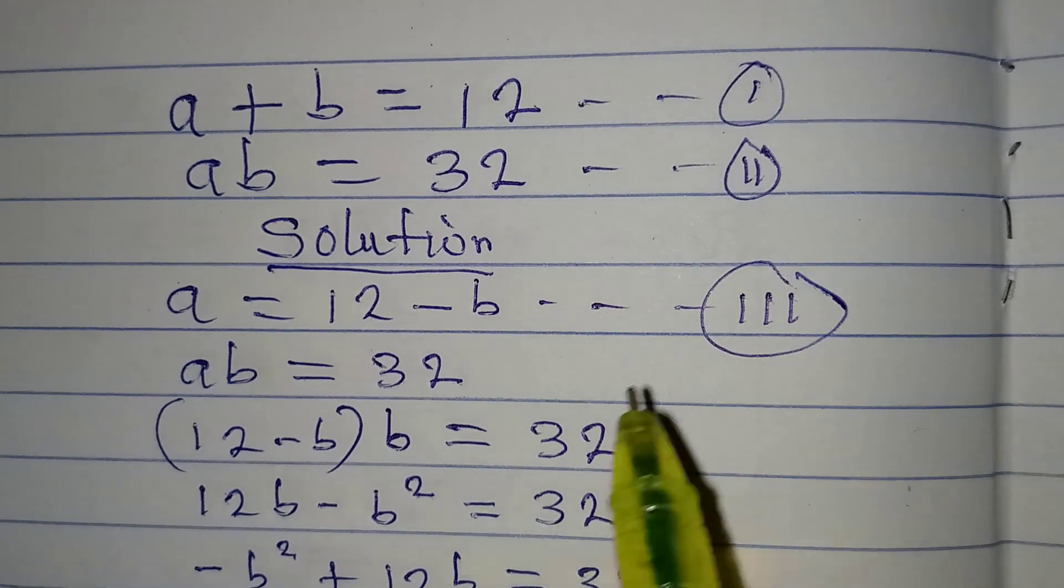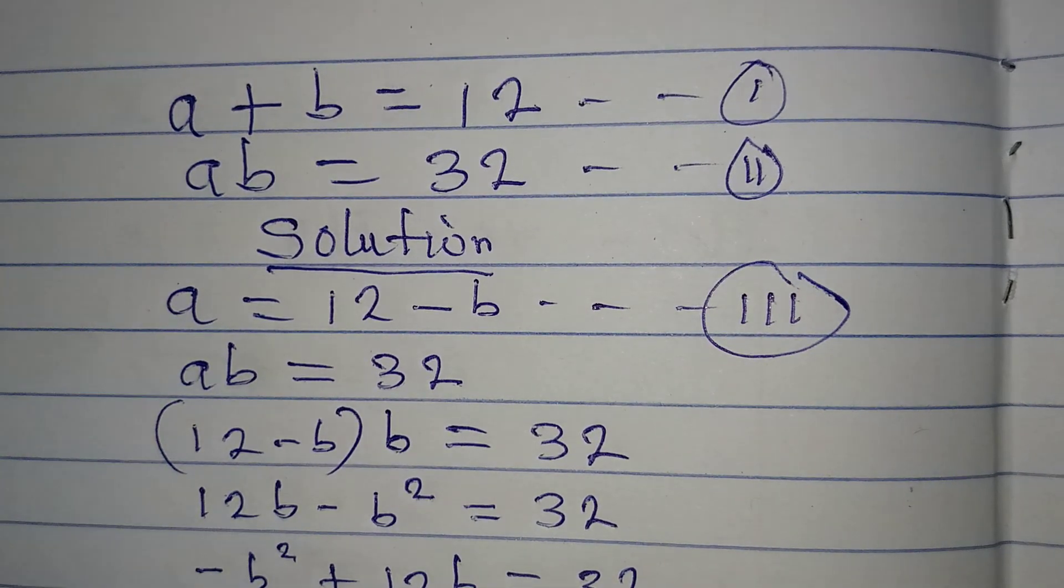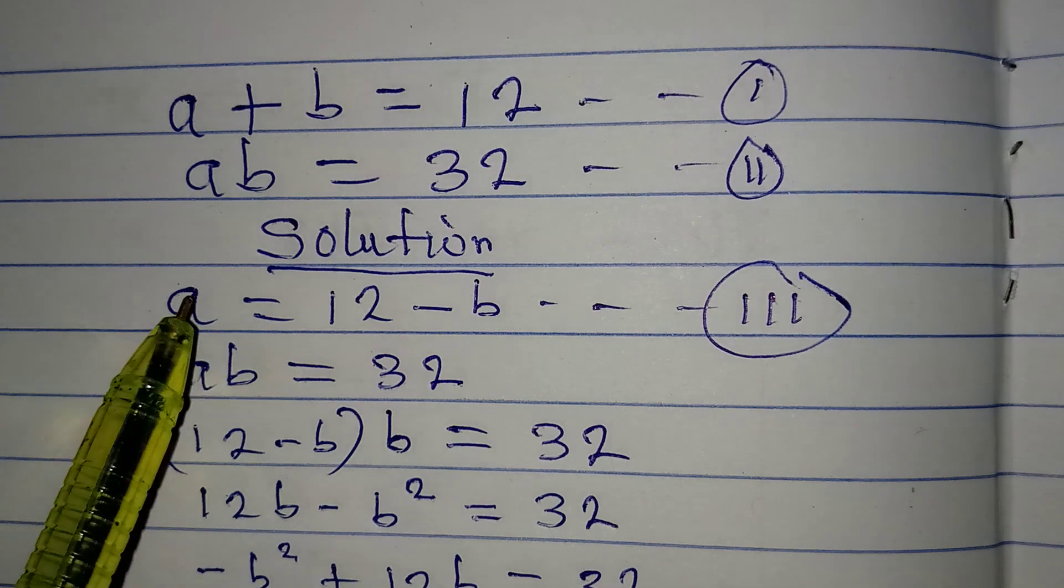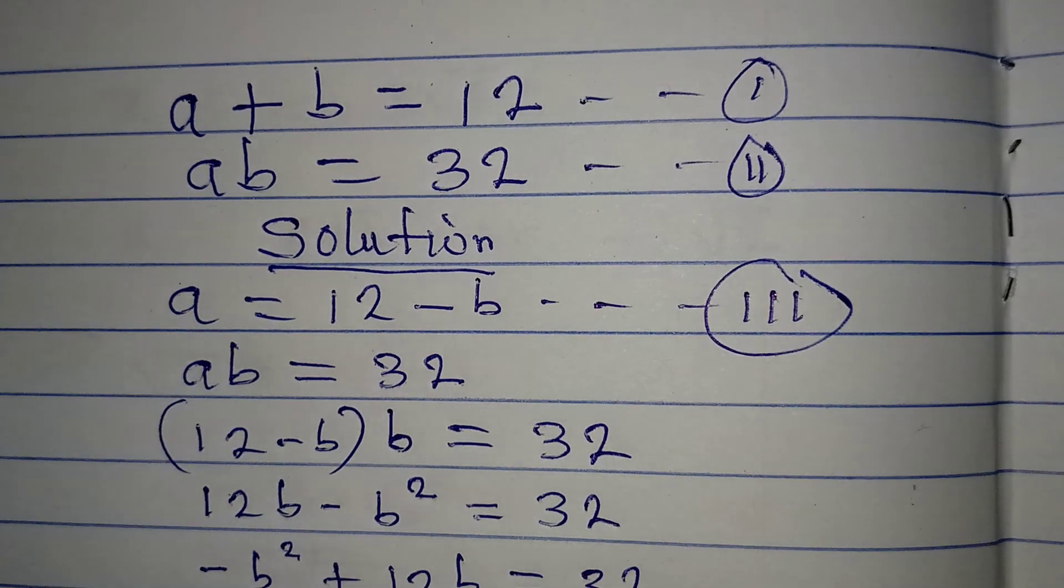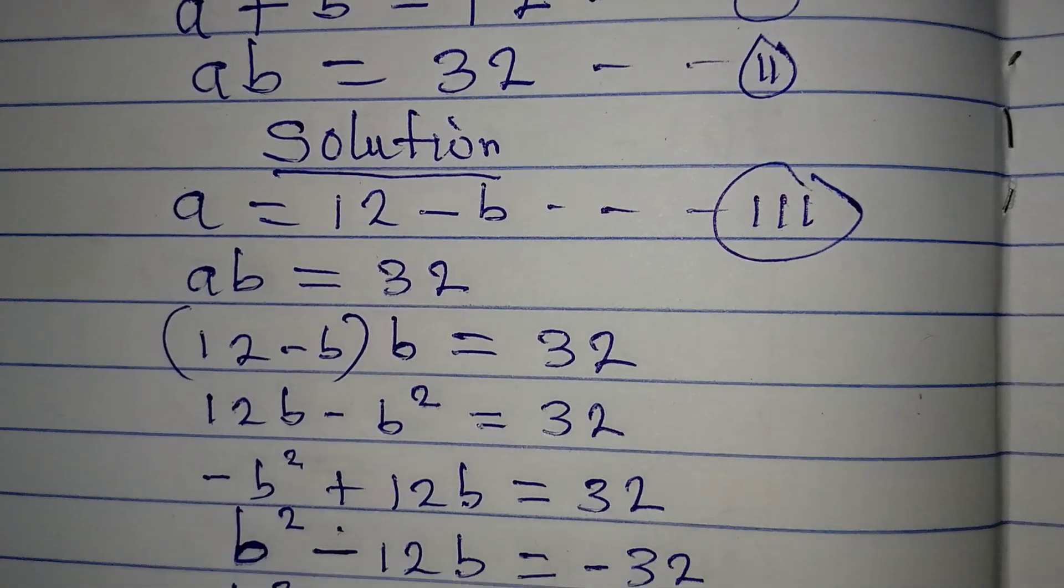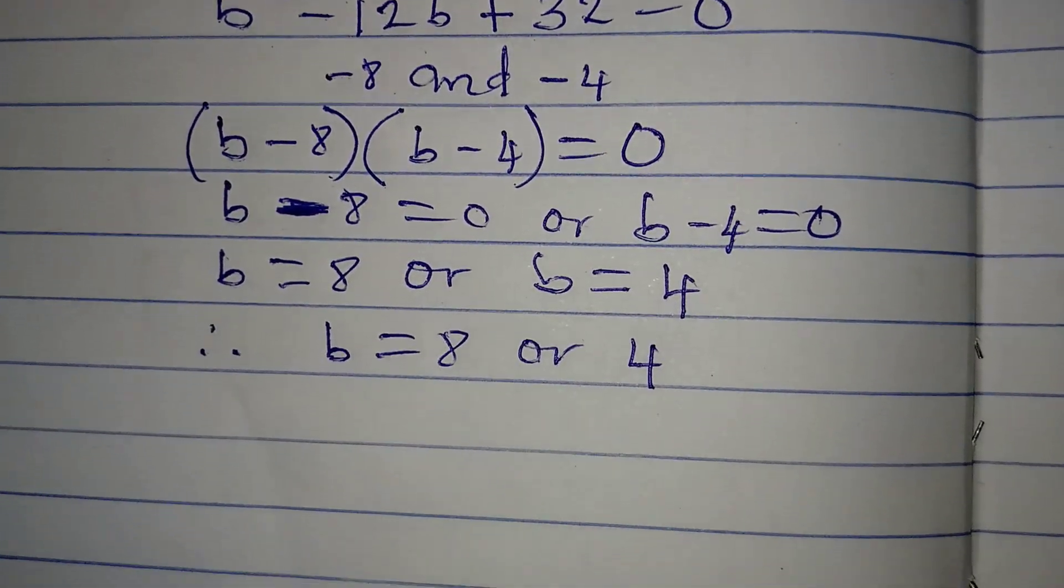From equation 3, we can get the value of A. We can get the value of A, so let's go back there and impute what we are having.